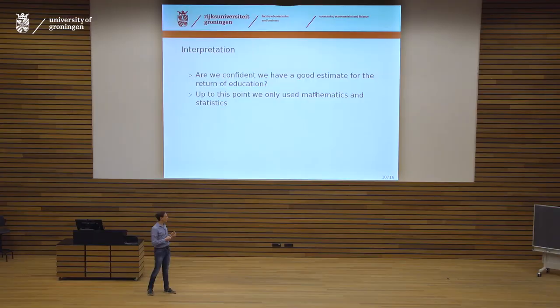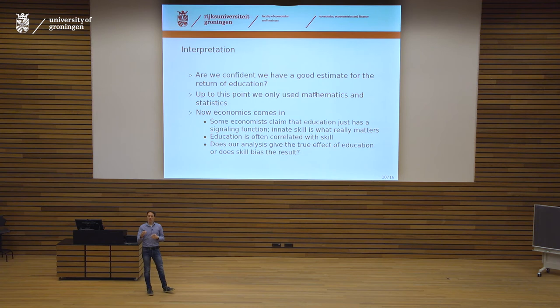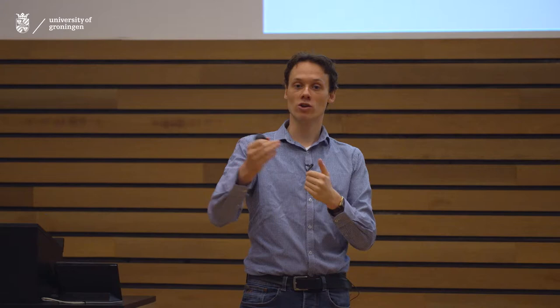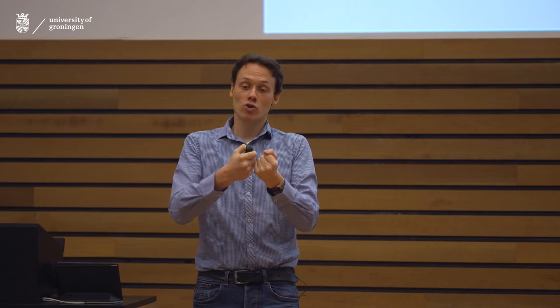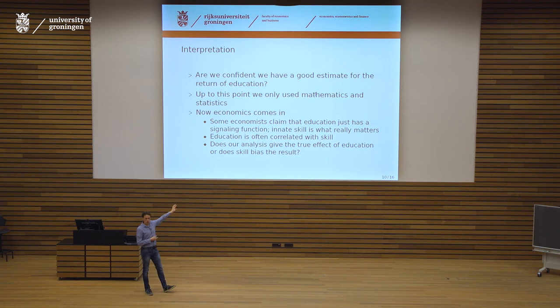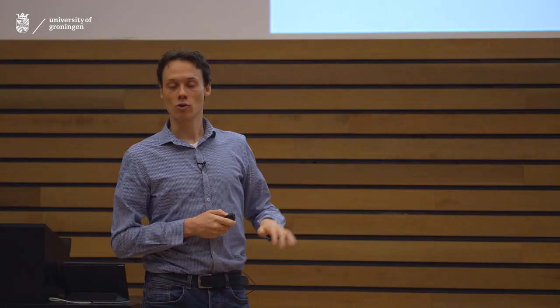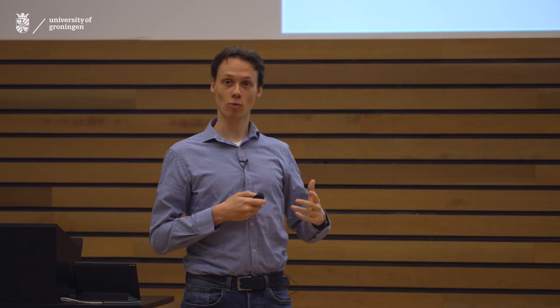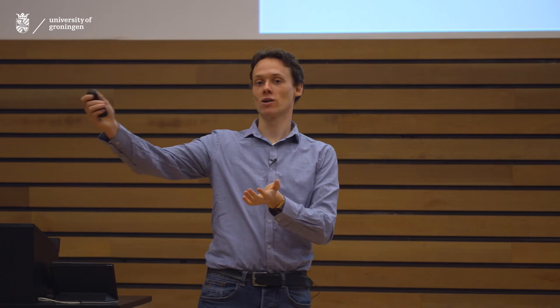Some economists claim education is only useful as a signaling function — firms don't care what you actually learned, they only care that you are skilled. Skill is hard to observe, so they use education as a proxy. More skilled people tend to have higher income, and they also tend to attain higher education more easily. This gives us the same problem as the ice cream example: does our analysis give the true effect of education, or is there a bias due to omitting skill?